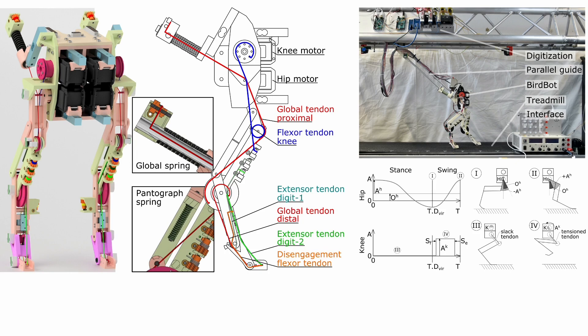BirdBot is instrumented with force, torque, current, and position sensors. The robot is walking on a treadmill and is guided in plane by a parallel mechanism mounted to a slider. A central pattern generator produces feed-forward trajectories for hip and knee motors during walking.